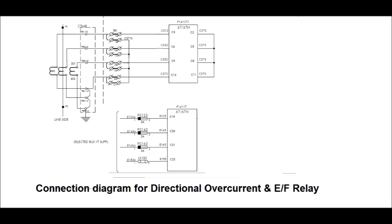Now, the connection diagram for MICOM P141 directional overcurrent relay has been shown in this diagram. It takes the PT voltage at the port as shown and CT current as shown in the upper portion of the diagram. The CT polarity must be correct, otherwise for a fault on the transmission line section, it may not sense the fault as the directional feature is given in the relay. That is, the S2 terminal should be shorted for giving the directional forward feature in the transmission line, and the CT must be connected in proper polarity as shown in this diagram.